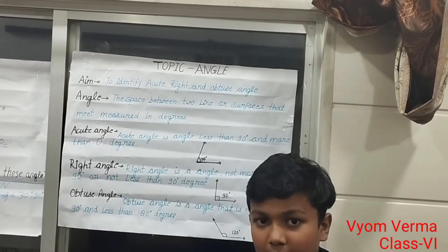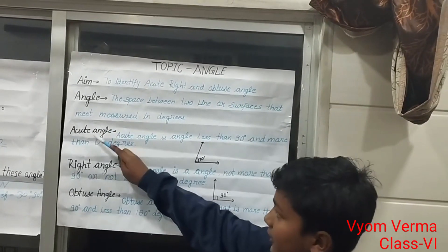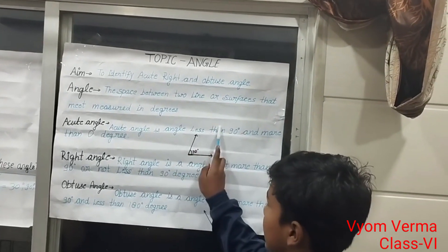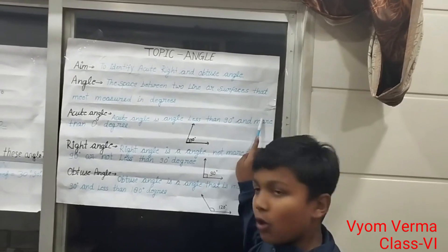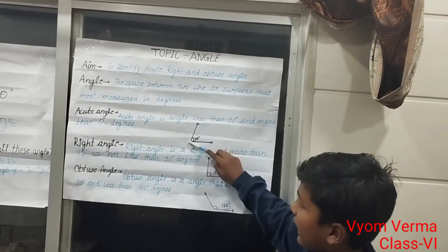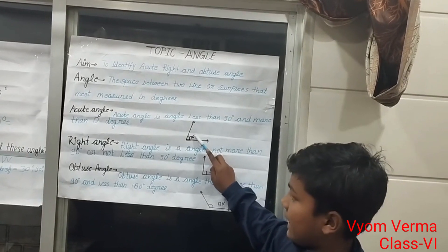Do you know what is an acute angle? I will tell you. An acute angle is an angle less than 90 degrees and more than 0 degrees. Here is an example of an acute angle. It is a 70-degree angle.